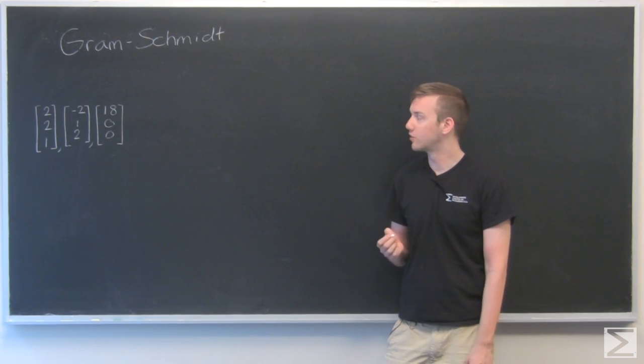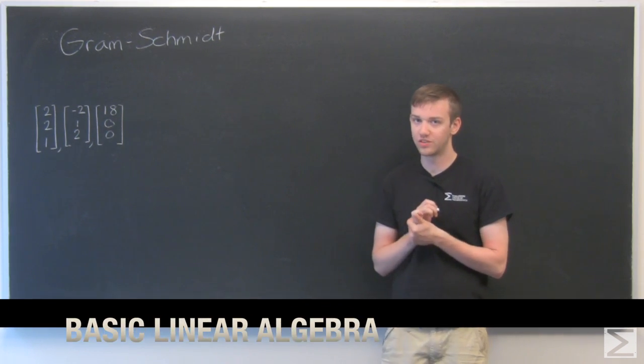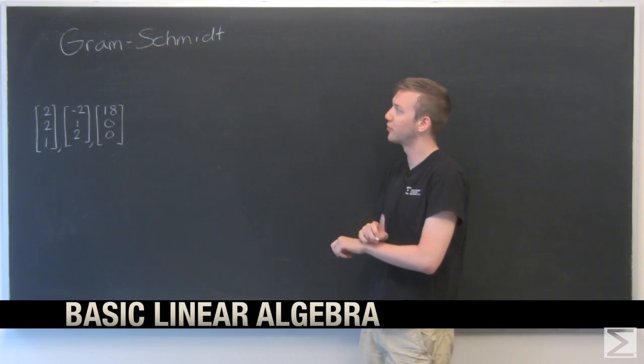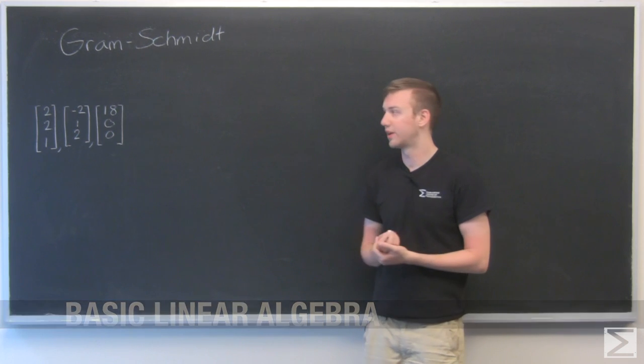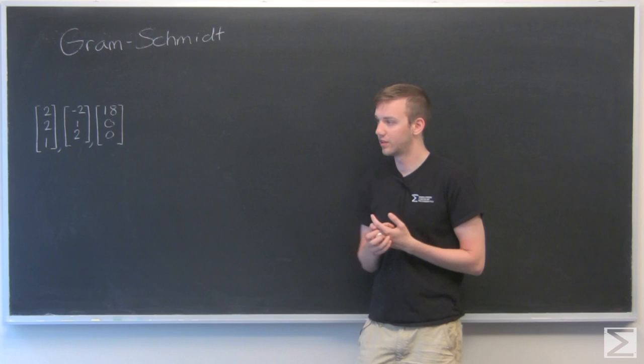So in this video, we're going to tackle the Gram-Schmidt process. This is the process by which we find an orthonormal basis given a set of vectors. So in a previous video, we went over what that was. I'll just recap very briefly.